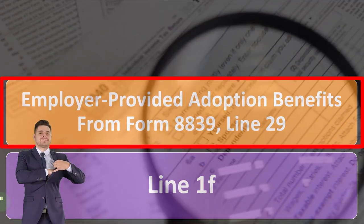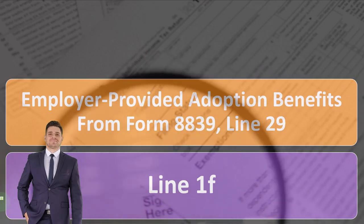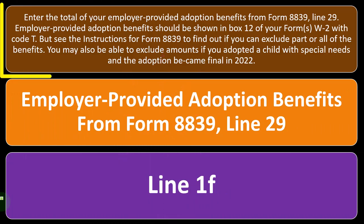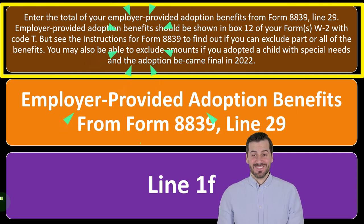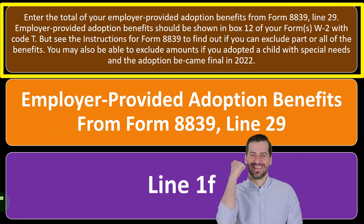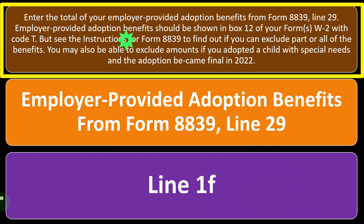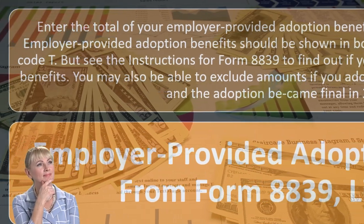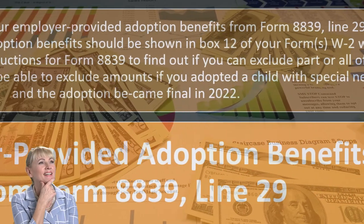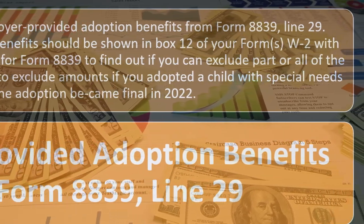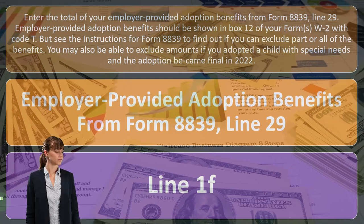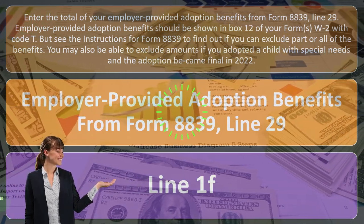Line 1f covers employer-provided adoption benefits from Form 8839, Line 29 — a somewhat unusual situation. Enter the total of your employer-provided adoption benefits from Form 8839, Line 29. These benefits should be shown in box 12 of Form W-2, typically with code T. See the instructions for Form 8839 to find out if you can exclude part or all of the benefits. You may also be able to exclude amounts if you adopted a child with special needs and the adoption became final in 2022.